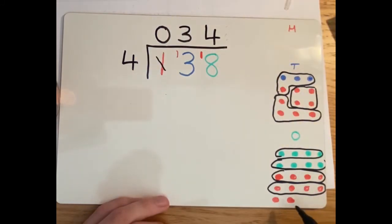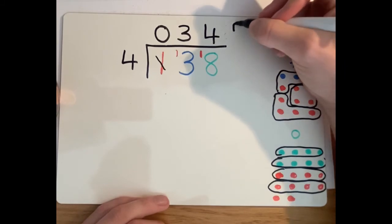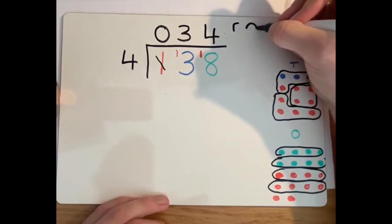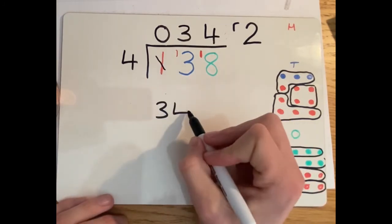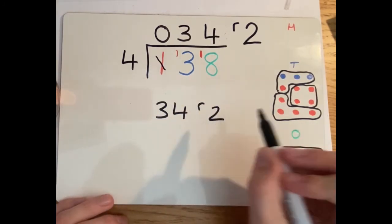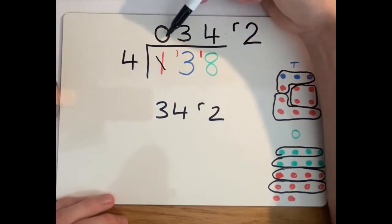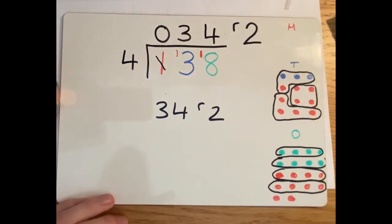And this time, we have to leave these two as a remainder. So our answer was 34 remainder two. And you can see why we didn't need to put that zero here when it's on the first column, because when we write 34, you don't need to put a zero before it. Hope that helps.